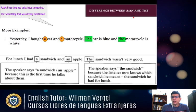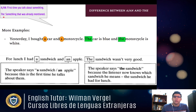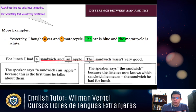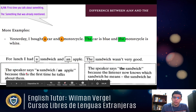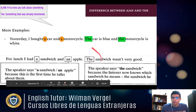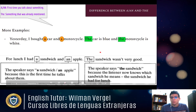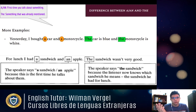First, the difference between a, an, and the. We use a or an when we talk about something for the first time. We use the when something was already mentioned. For example: 'For lunch, I had a sandwich and an apple.' It's the first time the speaker talks about them. Then: 'The sandwich wasn't very good' — because the listener now knows which sandwich is meant. More examples: 'Yesterday I bought a car and a motorcycle' — first mention. Then 'The car is blue. The motorcycle is white' — already known.